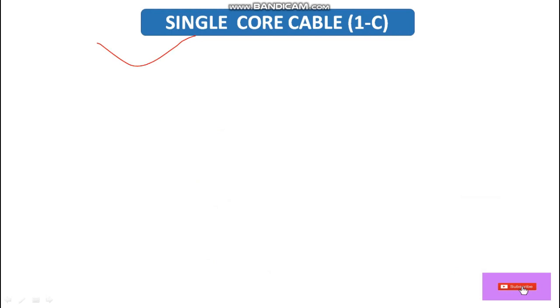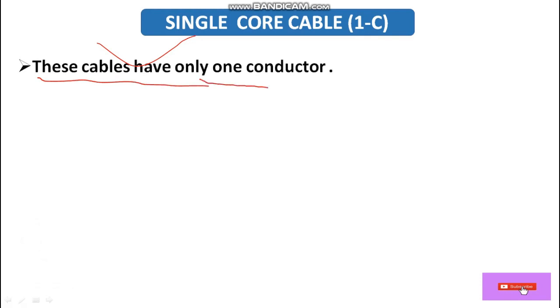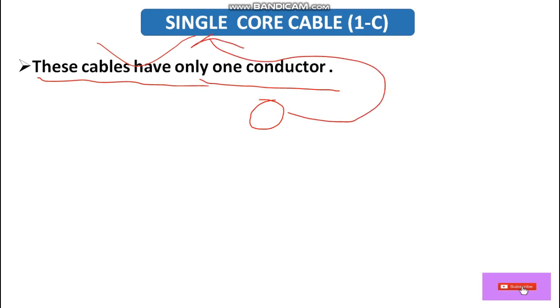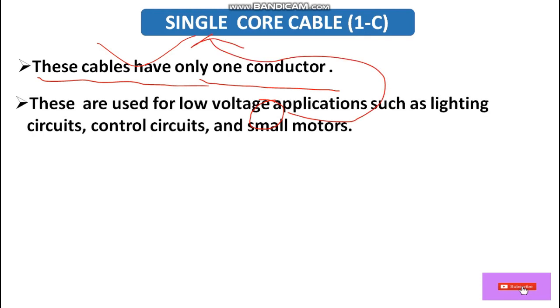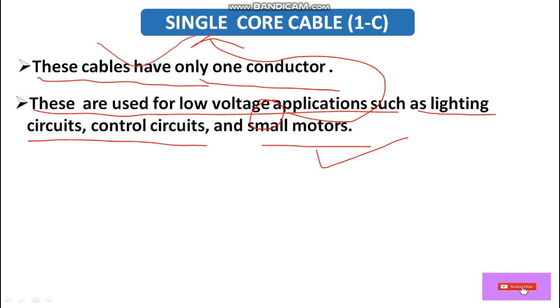First, let's discuss single core cable. A single core cable has only one conductor. These are used for low voltage applications such as lighting circuits, control circuits, and small motors.